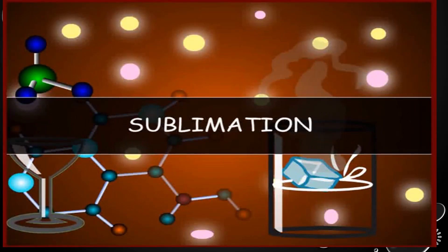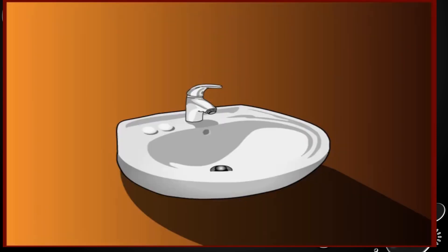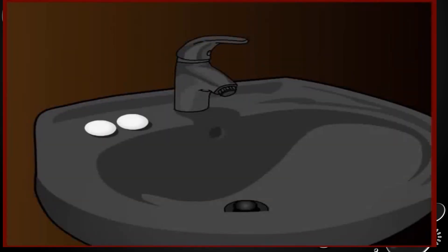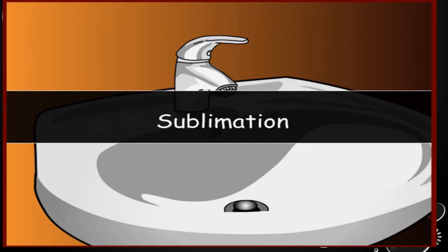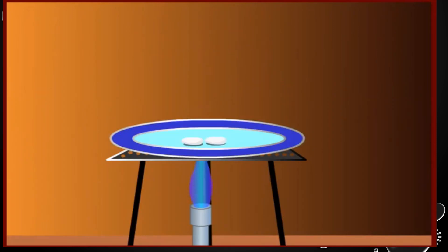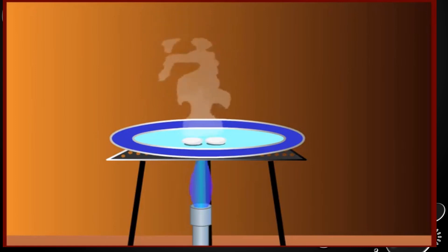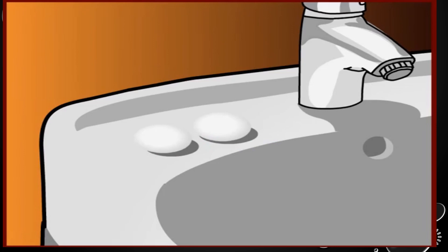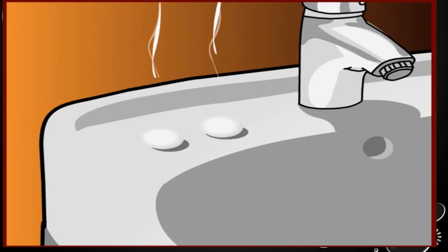Let us see with the help of this activity how sublimation takes place in daily life. You must have observed naphthalene balls in your washrooms — they slowly get smaller in size and finally disappear within a few days because of sublimation. Solids otherwise convert into liquids on heating, but examples like naphthalene and camphor on heating directly convert into gaseous form, so they don't leave any residue.